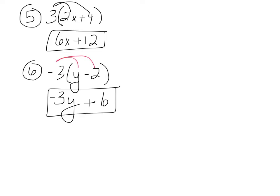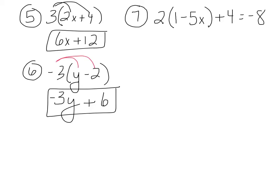The homework problems are not that easy — they will involve distribution within an equation. Example 7: 2 times the difference of 1 and 5x, plus 4, equals negative 8. The extra step here is to always get rid of the parentheses first by distributing. Distribute the 2: 2 times 1 is 2, and 2 times negative 5x is negative 10x. So we have 2 minus 10x plus 4 equals negative 8.